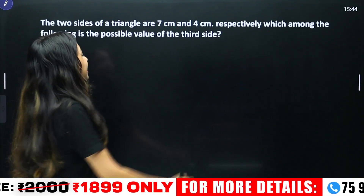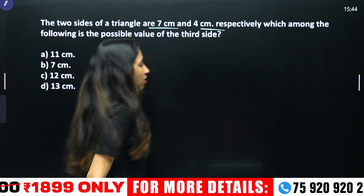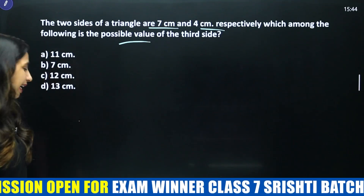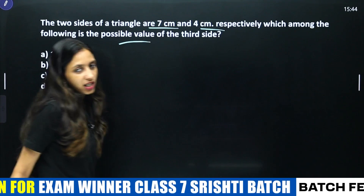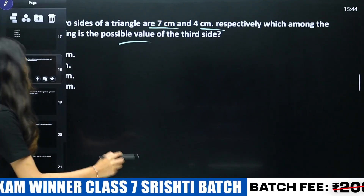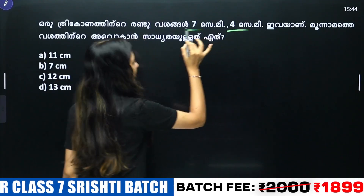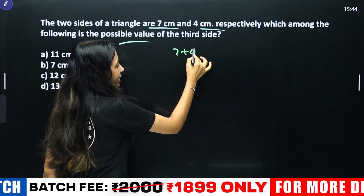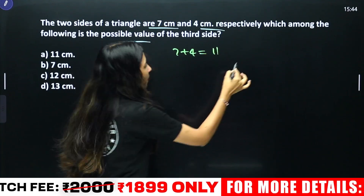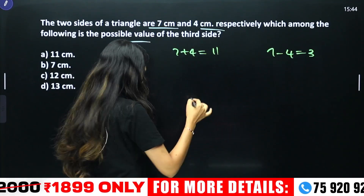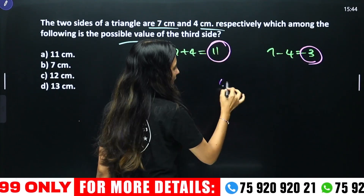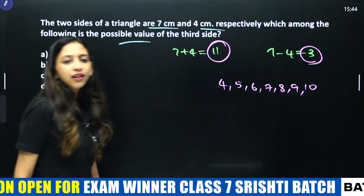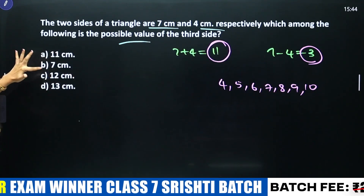The two sides of a triangle are 7 and 4. We need to find the range for the third side. The third side must be greater than 7 minus 4, which is 3, and less than 7 plus 4, which is 11. So the third side can be 4, 5, 6, 8, 9, or 10. The value 8 is within this range — but checking shows it is not valid here.